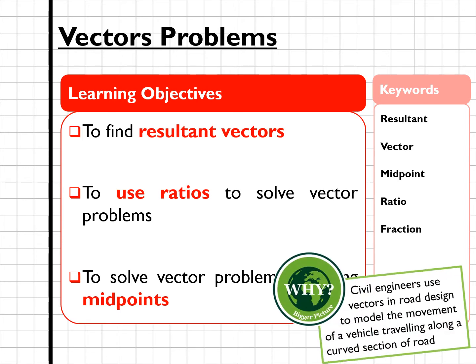Now, civil engineers use vectors in road design to model the movement of a vehicle travelling along a curved section of road, remembering that vectors tell us movement, not our position.